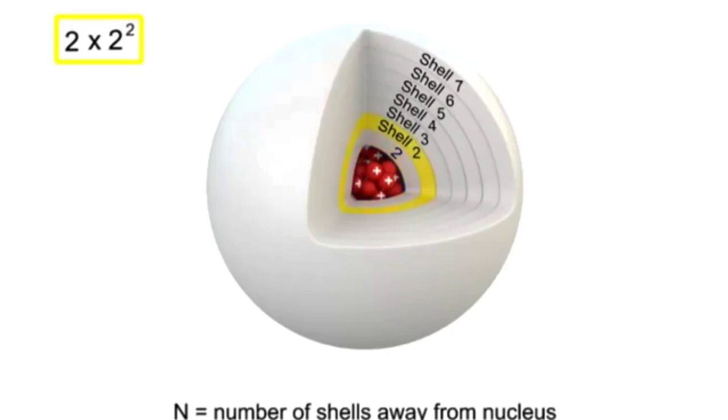For the second shell, it would be 2 times 2 squared, or 2 times 4, to give 8 electrons.